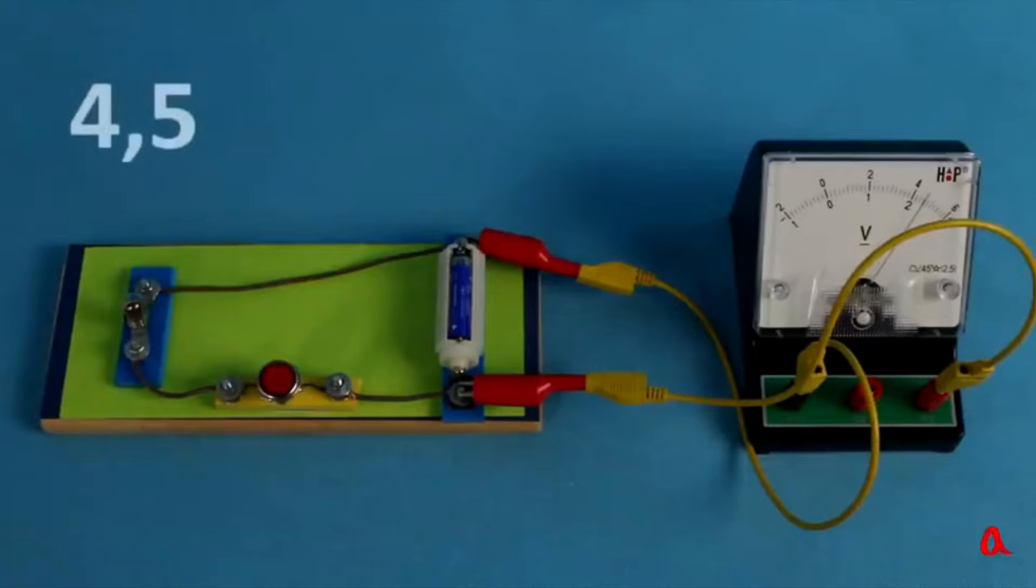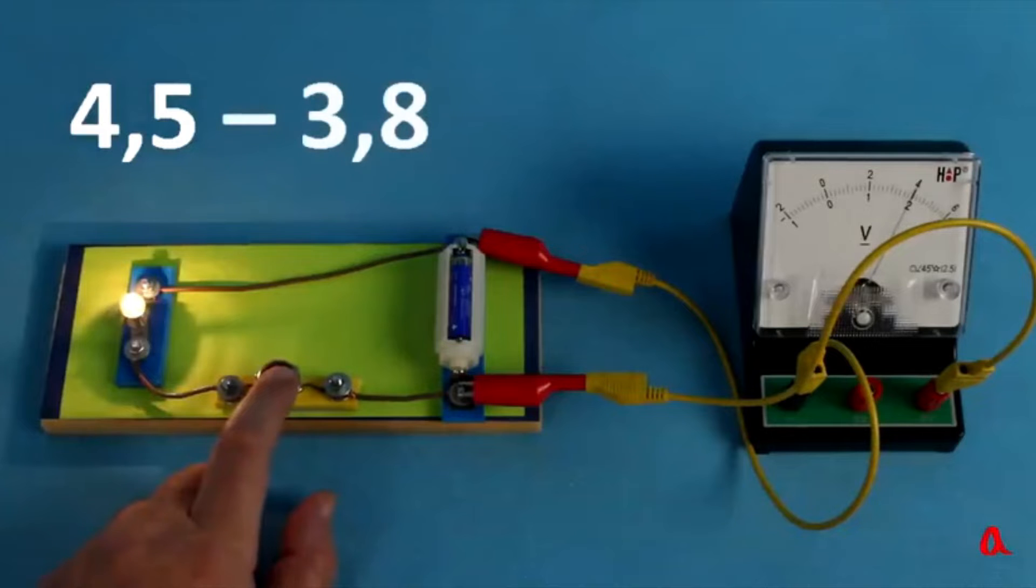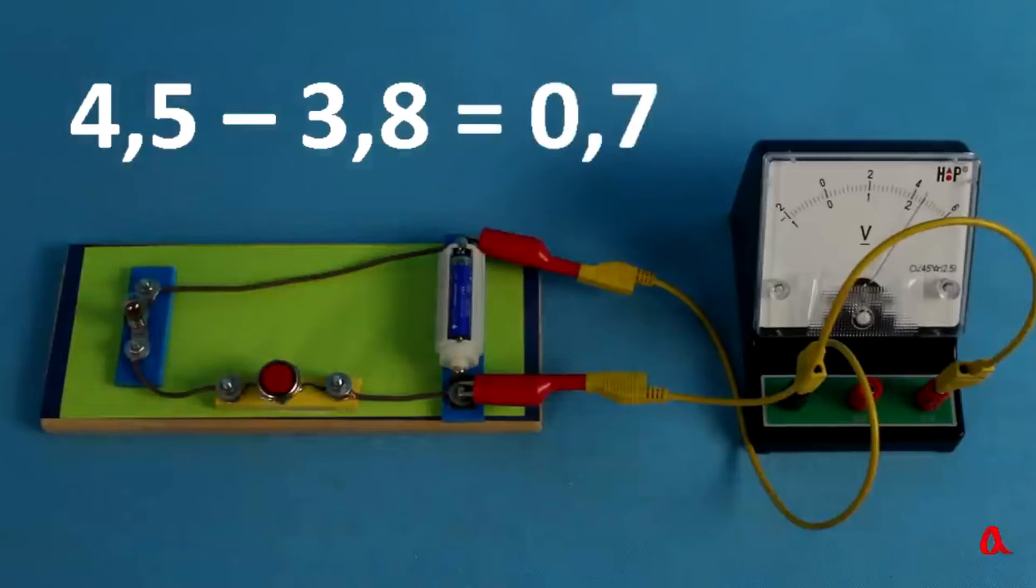And now when the circuit is open the voltmeter shows 4.5V and when the circuit is closed it shows less. Where do 0.7V go when circuit closes?